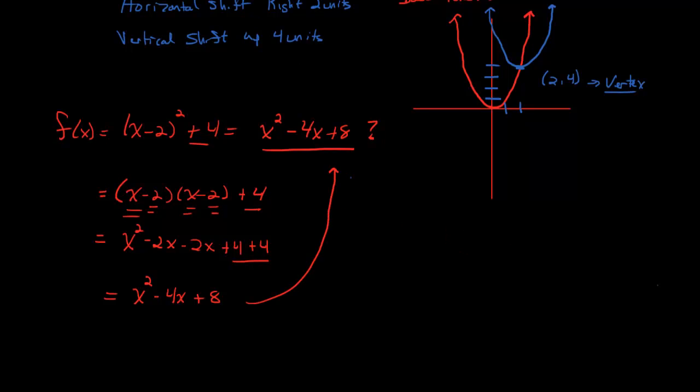Notice this form right here is called the standard form. We discussed this last lecture. And this is the standard form of a quadratic. And that doesn't really tell us very much. If we look at x squared minus 4x plus 8, that doesn't really tell us very much. I can't determine the new vertex from there because I don't know if we went to the right or to the left or if we went up or we went down.